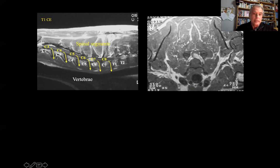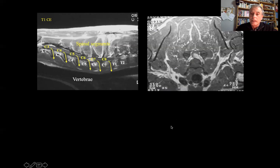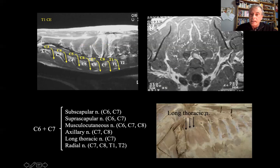Here we can draw the nerves, spinal segments, and vertebrae. We are at T1, and this is for C7, etc. So this lesion is affecting the spinal segments at the level of C6 and C7 in the cervical intumescence. Which nerves are formed at the level of C6 and C7? The suprascapular, infrascapular, and musculocutaneous.